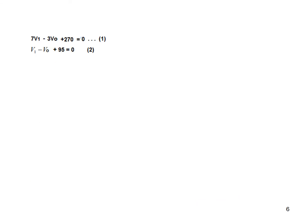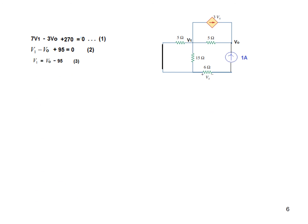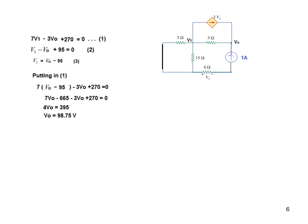Solving the two equations: from equation 2 we write V1 in terms of V0 as V1 equals V0 minus 95, and substituting into equation 1 and solving, we find V0 equals 98.75 volts.